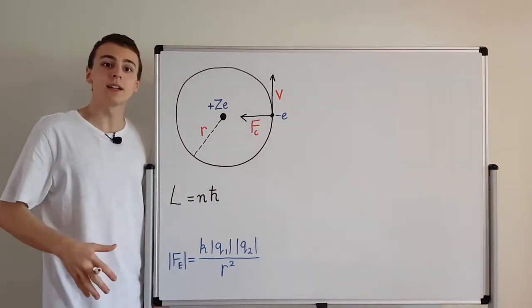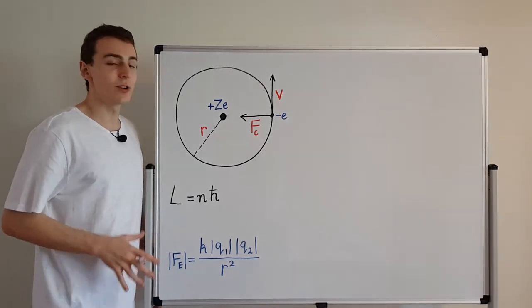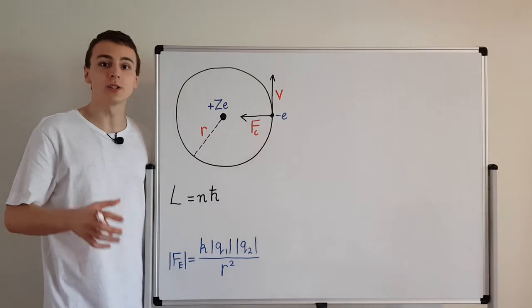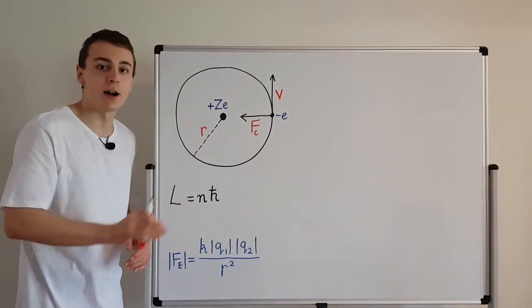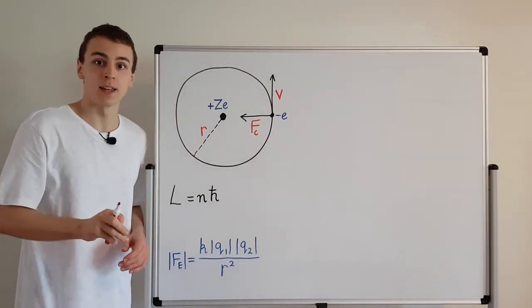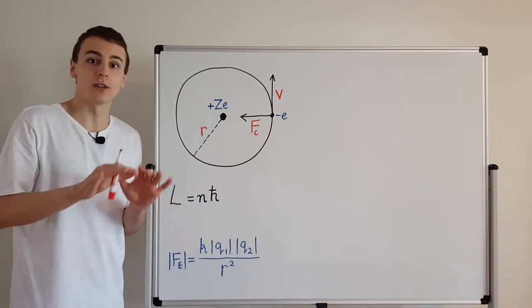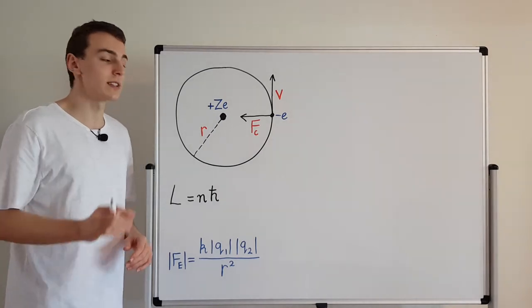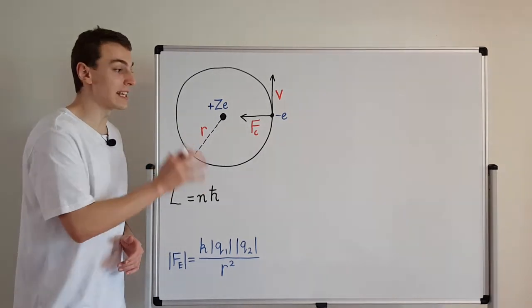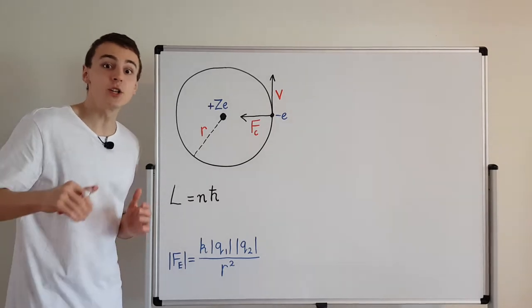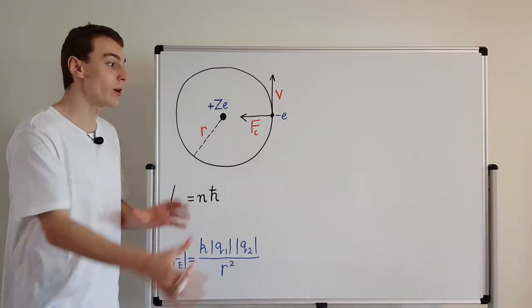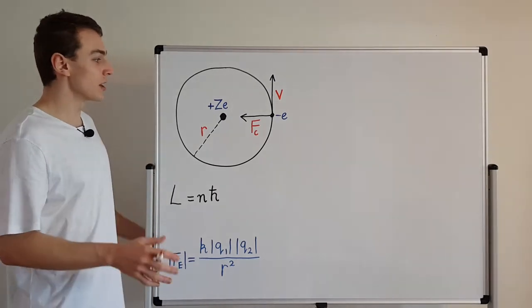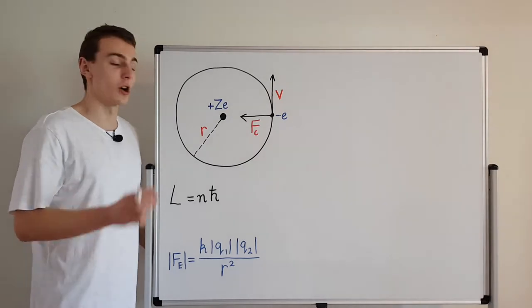The Bohr model can be applied to other elements, not just hydrogen, but it's very limiting. It only works for elements that behave closely to hydrogen — they need to have one outer valence electron. If they have more complicated electron behavior, the Bohr model fails. The Bohr model works best with hydrogen and actually explains hydrogen's emission spectrum, which is why we're doing all of this derivation.